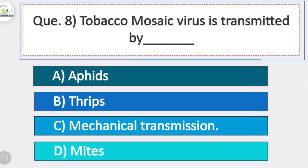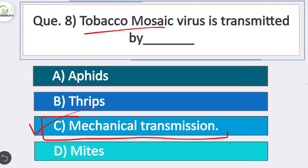Question 8: tobacco mosaic virus is transmitted by? Option C is correct — mechanical transmission. Tobacco mosaic virus is transmitted by the means of mechanical transmission.